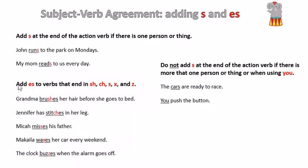Here's another rule. Add ES to verbs that end in SH, CH, S, X, and Z. Grandma brushes her hair before she goes to bed. There's a SH at the end of the root word brush, so we add an ES to the word brush, which is brushes.